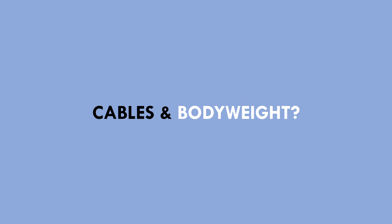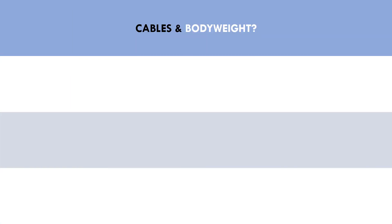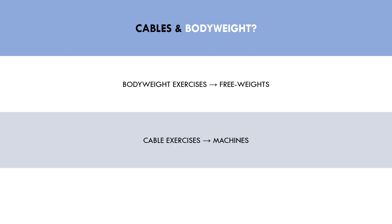While free weights and machines cover most exercises, we also have other forms of resistance training, like cable exercises and body weight lifts. While these don't exactly fit perfectly into either category, for the sake of this video, we will consider body weight lifts as free weight movements and cable exercises as machine movements. However, it should be noted that there is a spectrum of different exercises that can be considered more characteristic of free weight lifts, and some which are more characteristic of machines.